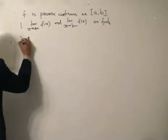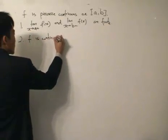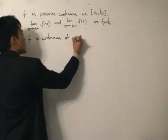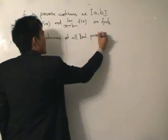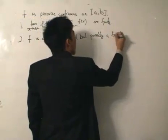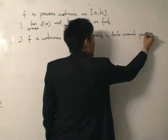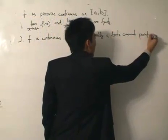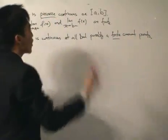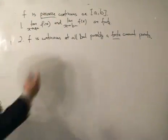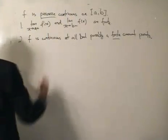Condition number two is that f is continuous at all but possibly a finite number of points. This finite number of points is just basically stressing the term piecewise continuous — it's not continuous everywhere, because there are certain points where the graph is discontinuous.